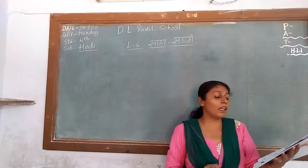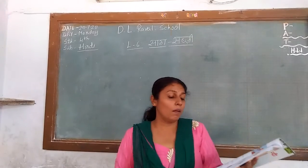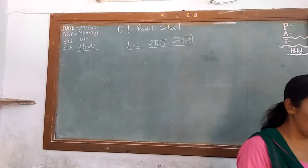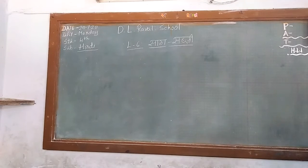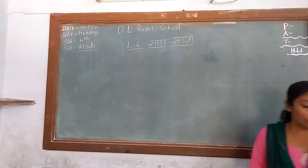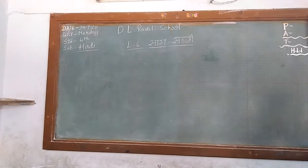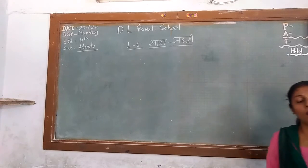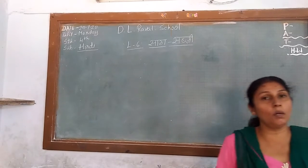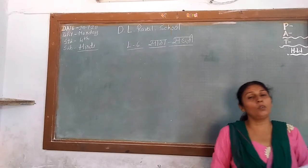Lauki — that is Bottle Gourd. Baingan — that is Brinjal. Bhindi — that is Lady's Finger. Tamatar — that is Tomato. Mirch — that is Chili. And Karela — that is Bitter Gourd. So in this lesson we learn the names of all these vegetables from Hindi to English.